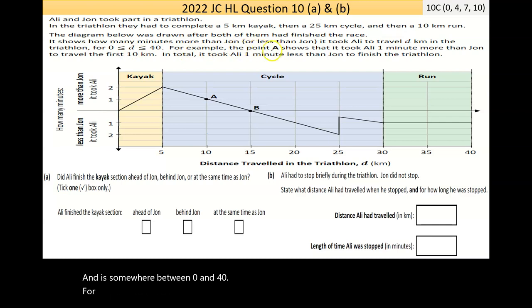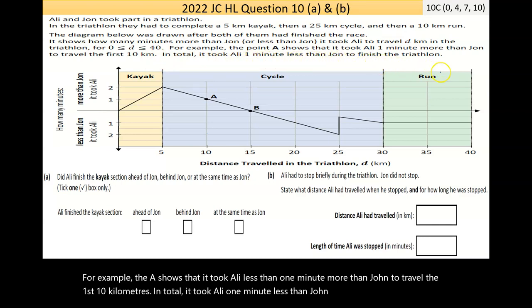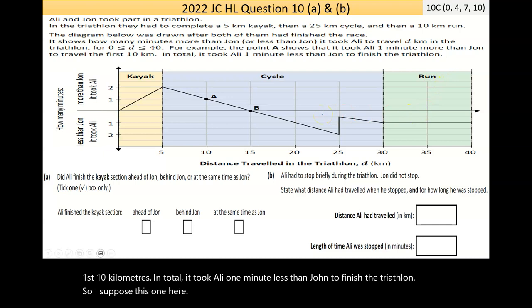For example, the point A shows that it took Ali less than one minute more than John to travel the first 10km. In total, it took Ali one minute less than John to finish the triathlon. So this one here is kind of confusing. You see here at the end there, it shows here, that's the one minute less.